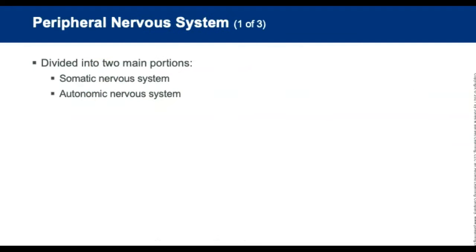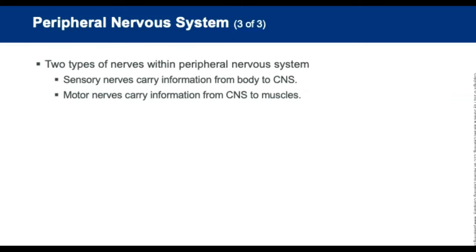The peripheral nervous system is divided into two parts. The somatic nervous system transmits signals from the brain to the voluntary muscles, allowing activities such as walking, talking, and writing. The autonomic nervous system is involuntary — it includes the sympathetic and parasympathetic systems. Within the peripheral nervous system there are two types of nerves: sensory nerves carry information from the body to the CNS, and motor nerves carry information from the brain to the muscles.